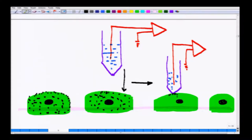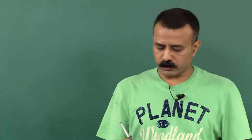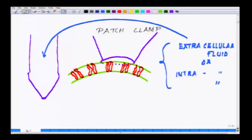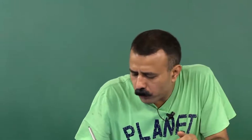Now we have a finite number of ion channels in very close proximity to the electrode — this is very important. Under that small pipette tip, which is approximately 0.5 to 1 micron, you have a finite number of ion channels.